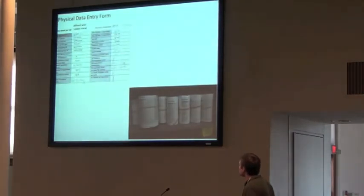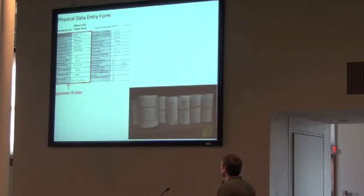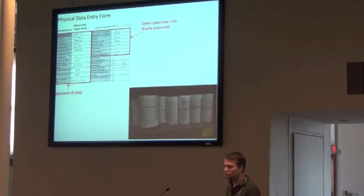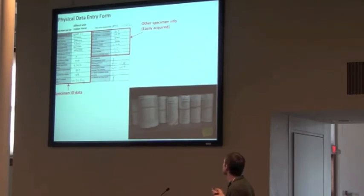Here's our physical data entry form. We have one of these sheets for every jar that we work on. On this side you have specimen ID-related data, the determination and the date. Other specimen information is pretty easy to acquire — basically when we have the jar, what information can we get really easily without too much time? So we take lengths, min and max lengths, information about specimen quality, mutations, sexes, and parasites.